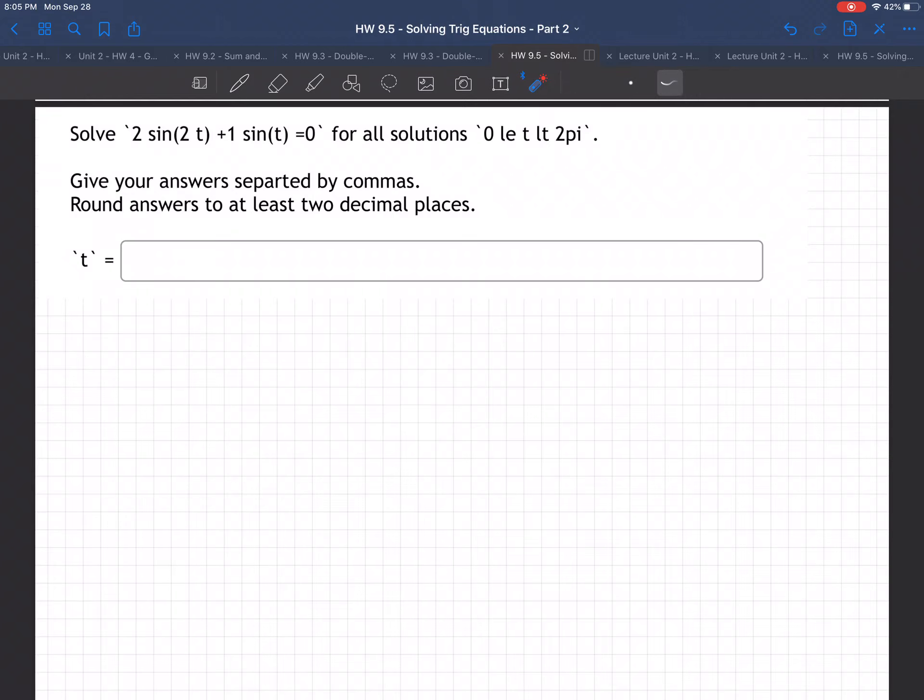Welcome to an example in which we are solving 2 sine 2t plus 1 sine t equals 0 for all solutions between 0 and 2 pi.